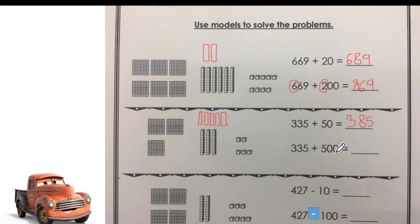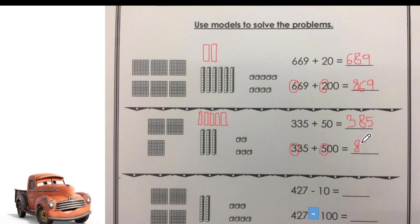For the addition of hundreds, I will use mental math. I know that the hundreds digits are the first one. So, 3 plus 5 equals 8, and the tens and ones remain the same: 35. The answer is 835.